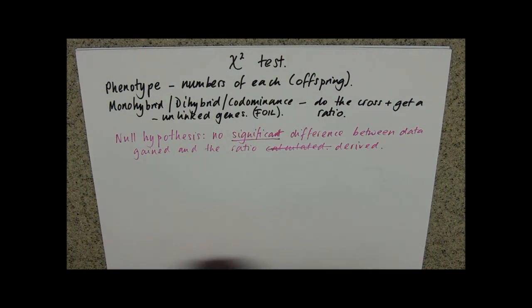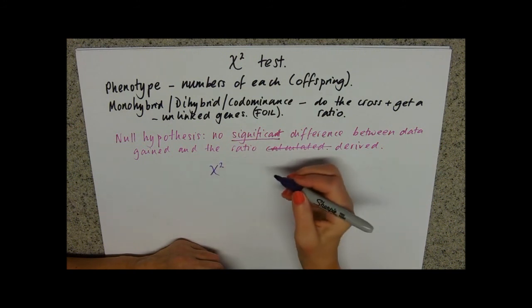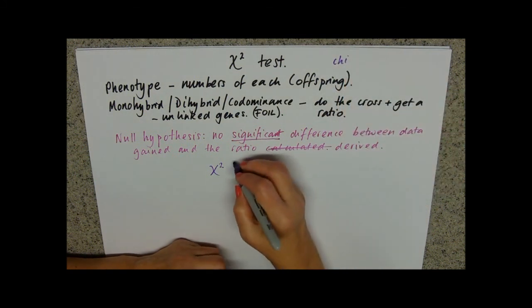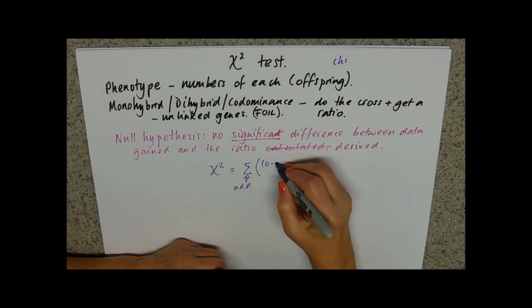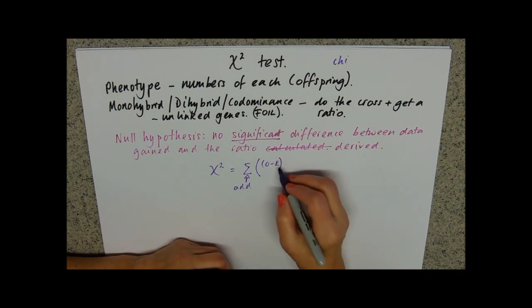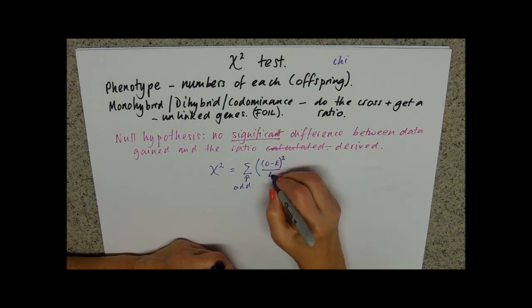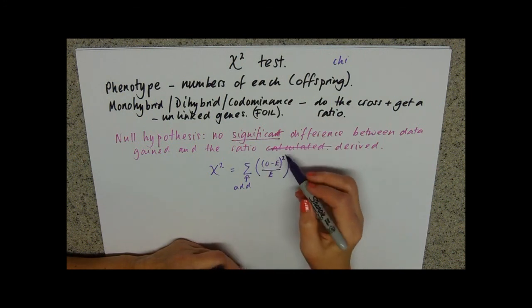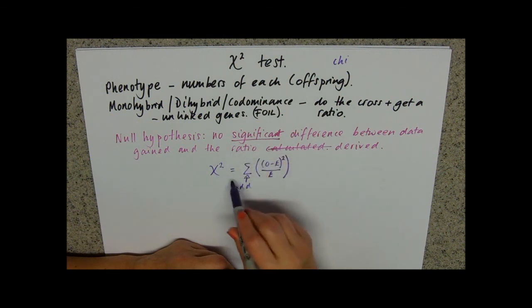The formula for chi-squared: chi is the Greek letter — written as 'chi.' Chi-squared equals the sum of (observed minus expected) squared, divided by the expected. The observed is your data that you've counted, and the expected comes from the ratio from the cross you've done. So you work out O minus E, all squared over E, for each phenotype, and then add them up to get chi-squared.